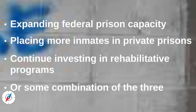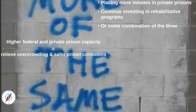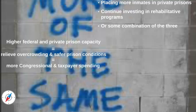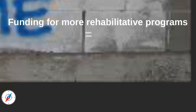What then would be the trade-offs of this approach? If Congress expanded the federal prison capacity or placed more inmates in private prisons, this would relieve overcrowding and create safer prison conditions, but it would also require Congress and taxpayers to spend more money to accommodate the nearly 250,000 federal inmates projected for 2018. Another option would be to fund more rehabilitative programs to decrease the chance that prisoners will return to prison, or what's called recidivism.